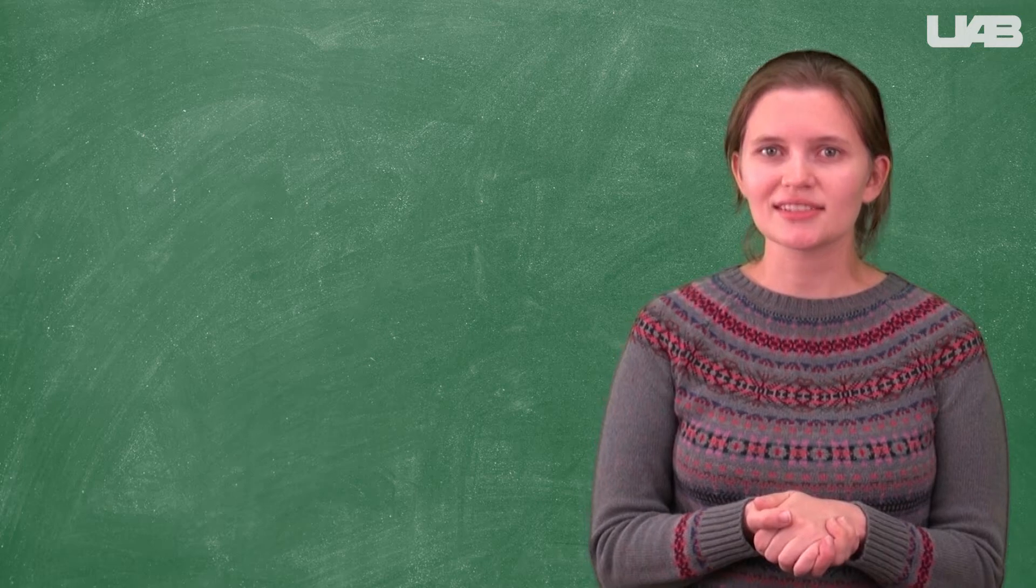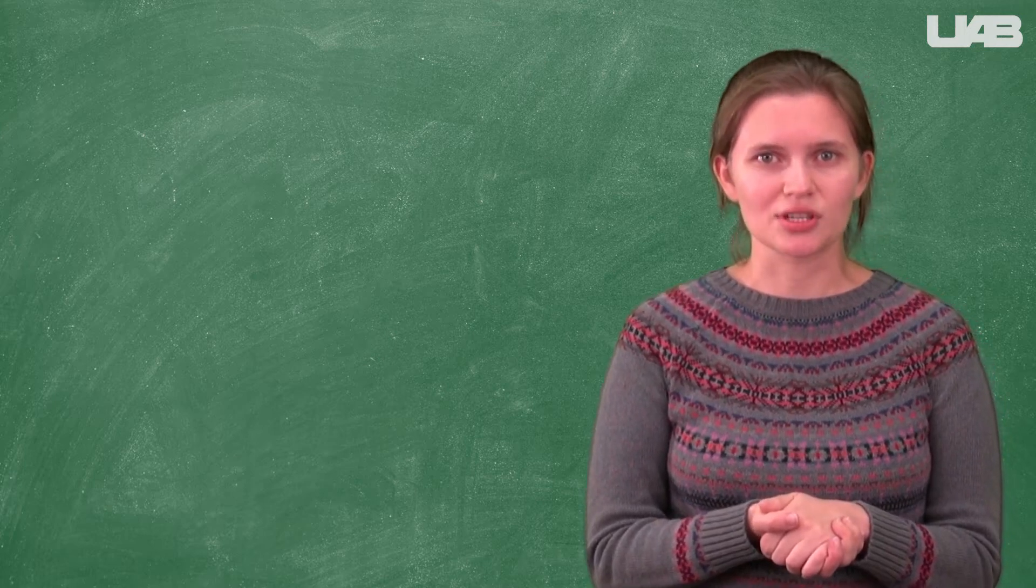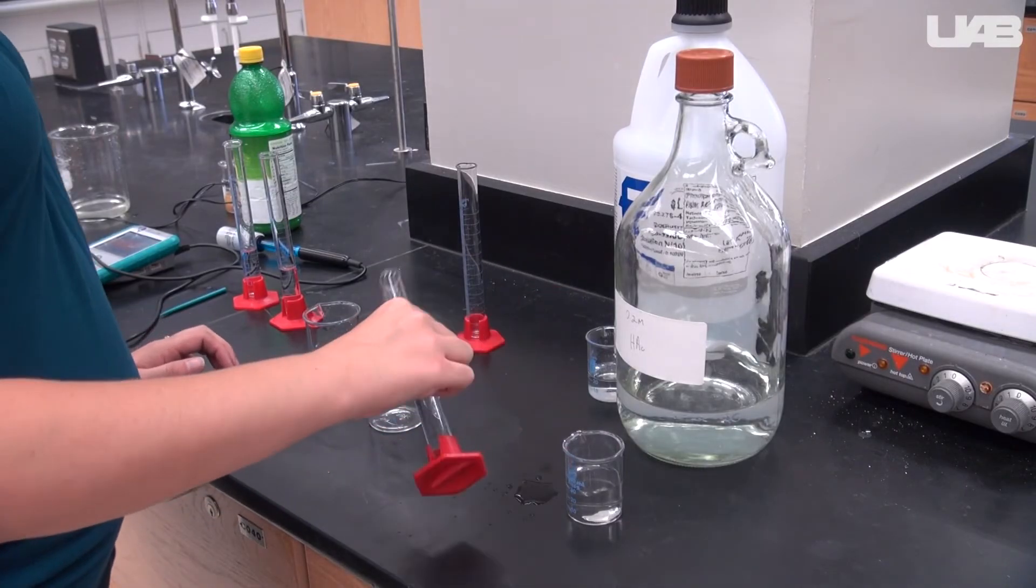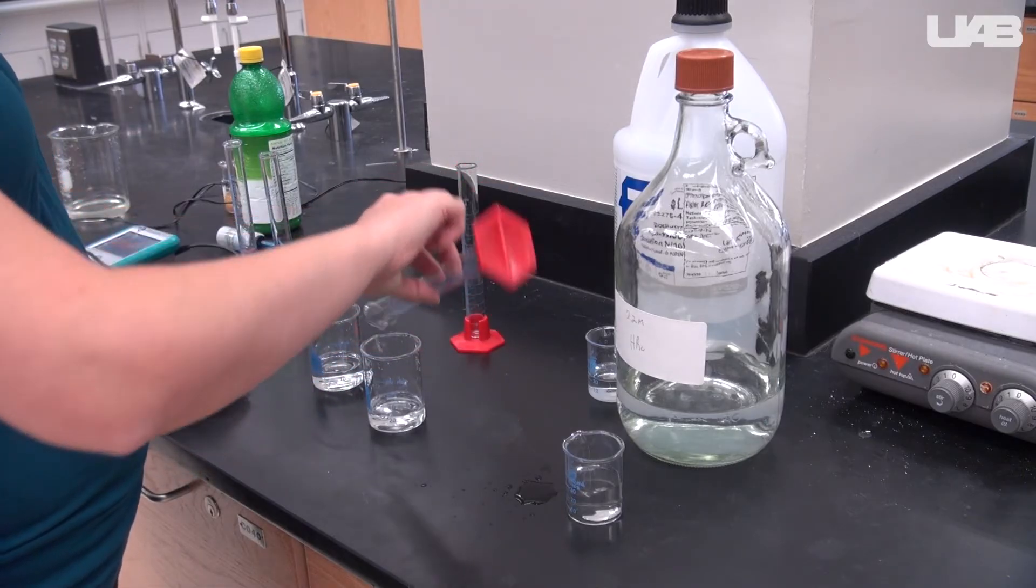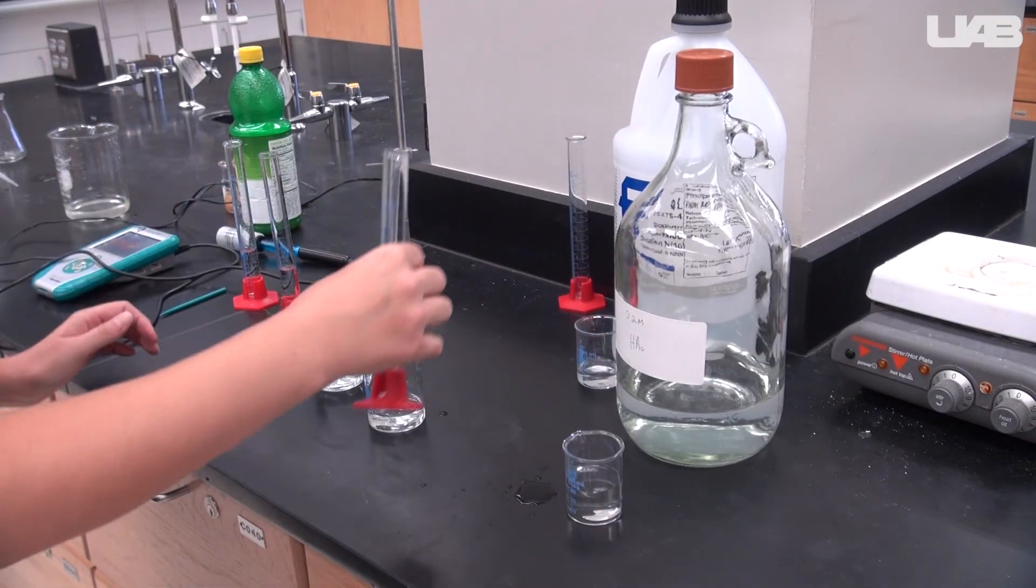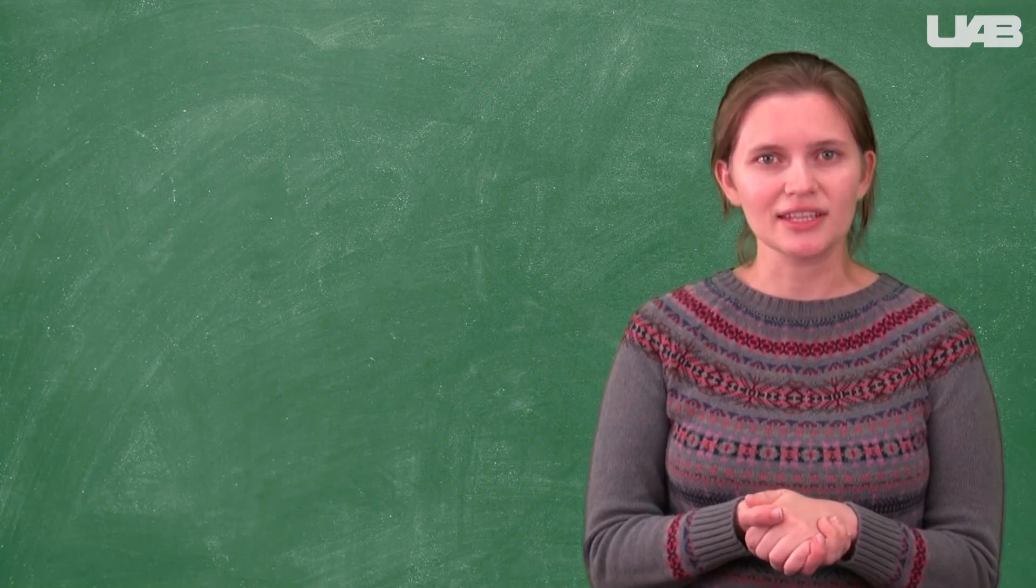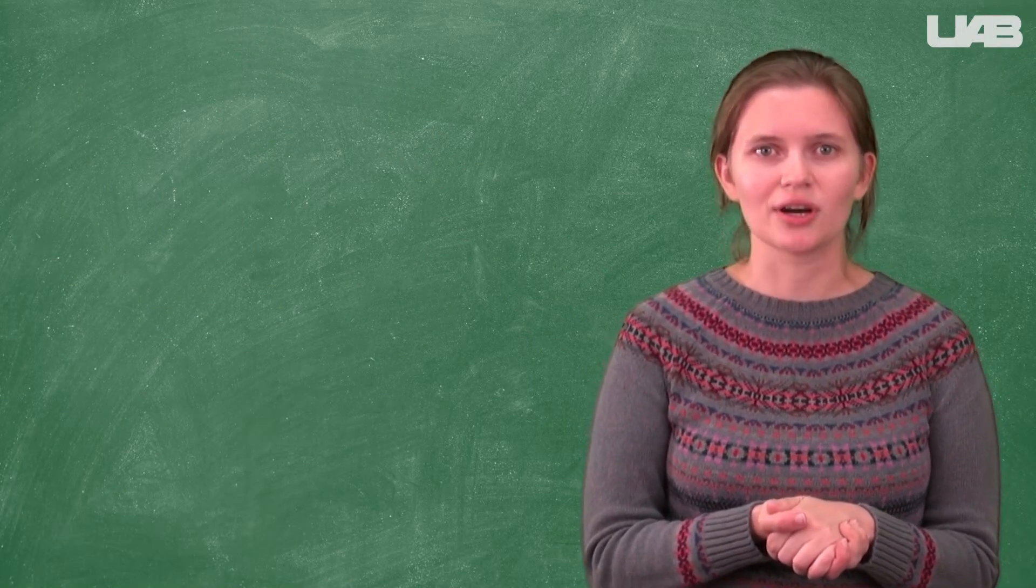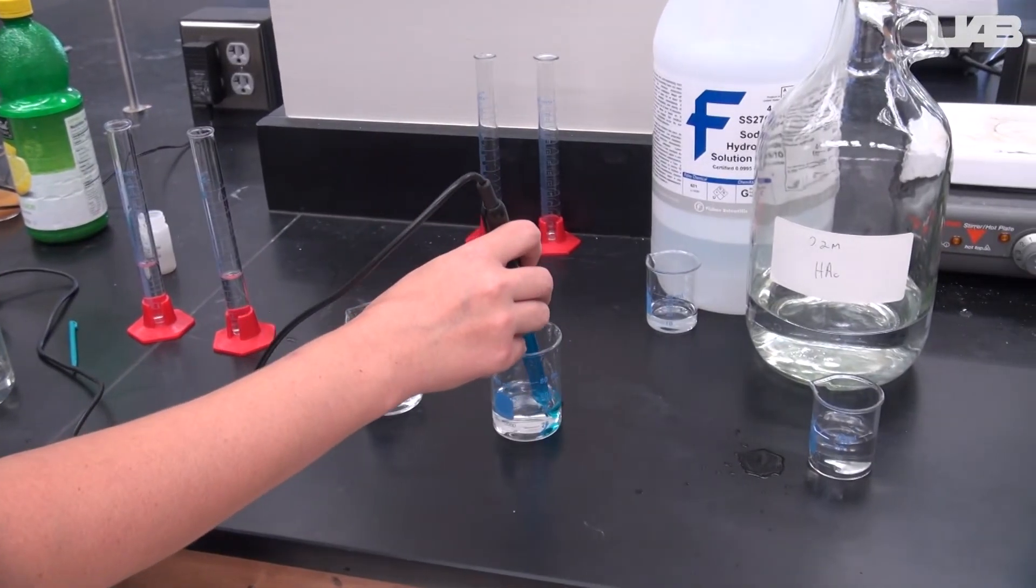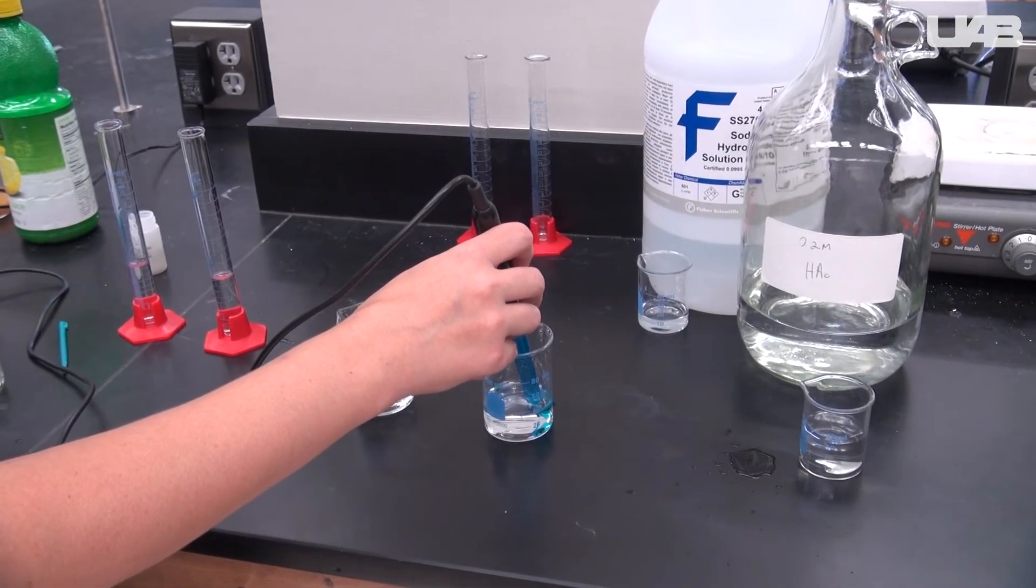Finally, during Exercise 3, you will make a buffer solution. Mix two parts of the 0.2 molar stock solution of acetic acid with one part of the 0.2 molar stock solution of sodium hydroxide. Get a second beaker and put the same volume of tap water in it. Measure the initial pH of both the buffer solution and the tap water.